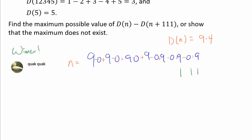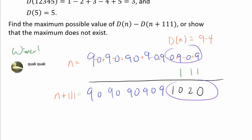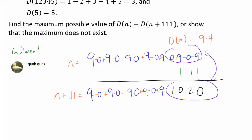So let's add 111 to this number and see what we get. The last few digits change, but the rest stay the same — for instance, we get digits like 0, 2, 0, 1 at the end, while the earlier 9, 0, 9, 0, 9 pattern remains. When we calculate d of n plus 111, the front portion is identical to d of n, so those parts cancel out when we subtract. Only the last 4 digits for this particular n actually matter when calculating d of n minus d of n plus 111. This may convince you that the maximum does indeed exist, because only a finite part of n matters.